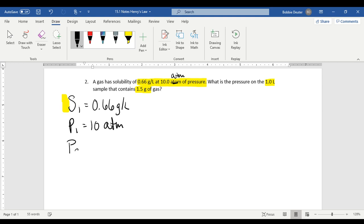We do not know our P2. That is a question mark. And we know our S2 is equal to 1.5 grams divided by 1 liter, or 1.5 grams per liter.